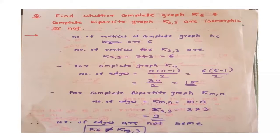For the complete graph K6, the number of vertices are 6. For the complete bipartite graph K3,3, the number of vertices is m plus n, that is 3 plus 3, which equals 6. So the number of vertices are the same.